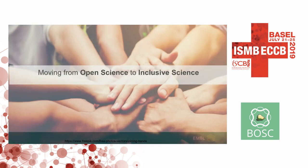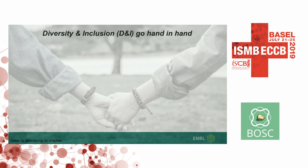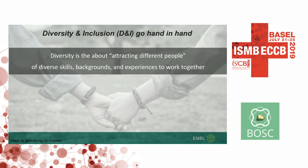In this talk, I want to propose moving from open science to more inclusive science. I'll give you some terminology so we're all on the same page. Diversity and inclusion — a lot of you have already heard of that. Diversity is about attracting different people of different skills, background, and experience to work together. The emphasis is not on the word diversity, but on the set of skills and experiences that each individual brings.